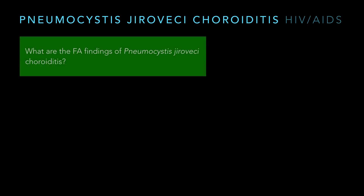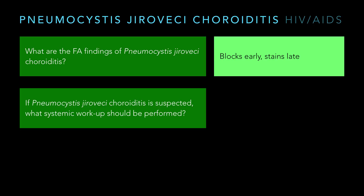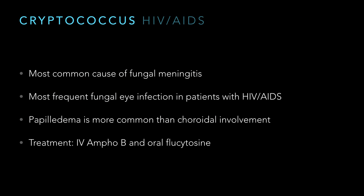What are the FA findings on a patient with Pneumocystis jirovecii chorioretinitis? It's the classic blocks early, stains late. If Pneumocystis jirovecii chorioretinitis is suspected, you need to call an internist, get a chest X-ray, LFTs, and an abdominal CT scan — but really, include your internal medicine friends. That's where I'd stop too.